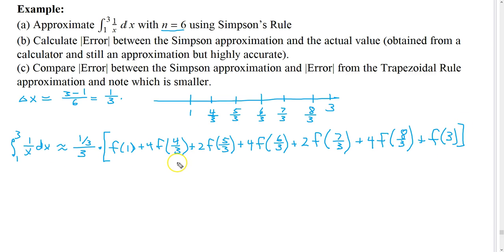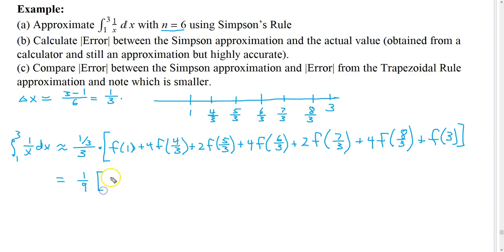By Simpson's rule, we have delta x over 3 with the pattern 1, 4, 2, 4, 2, 4, and then ending with a 1 in front of the f. Now we just have to evaluate this. The function is 1 over x, so f of 4 thirds is 3 fourths — we just flip these fractions. That's nice for this particular function.